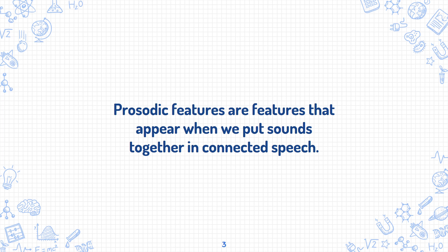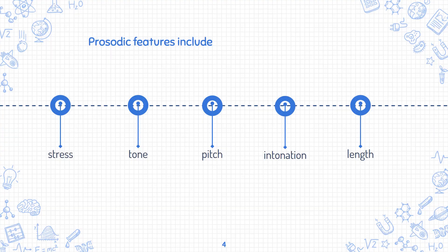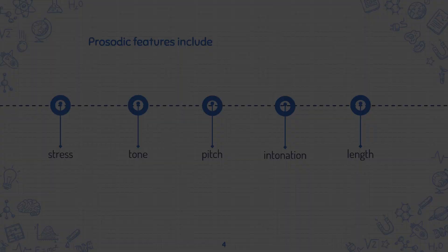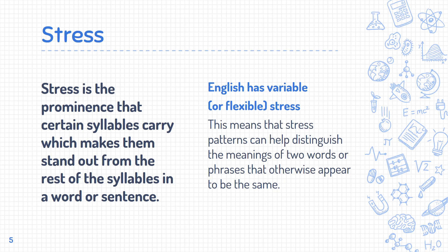Prosodic features are features that appear when we put sounds together in connected speech, so they do not appear in individual speech. Prosodic features include stress, tone, pitch, intonation, and length.